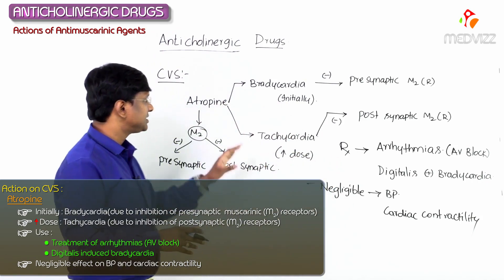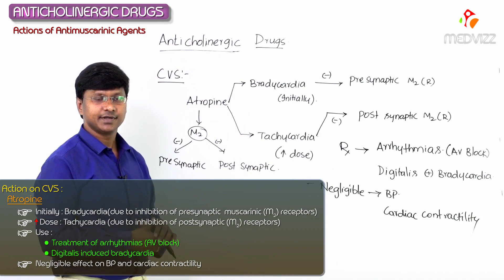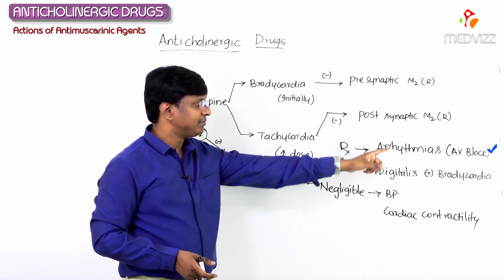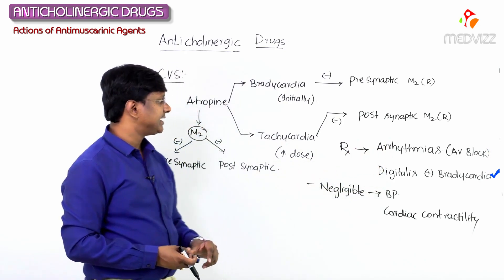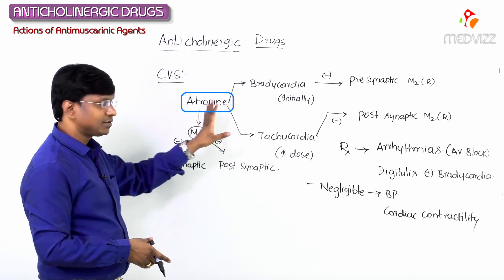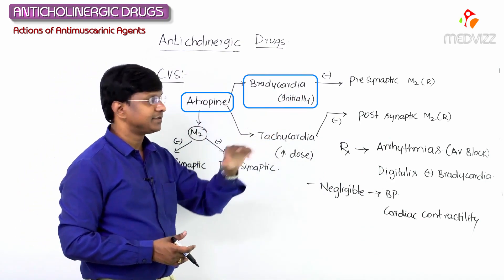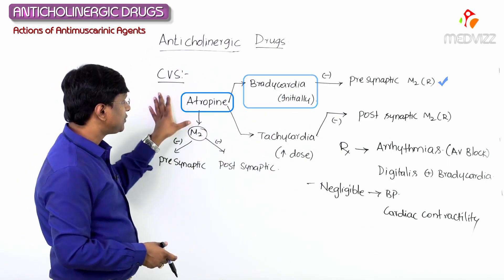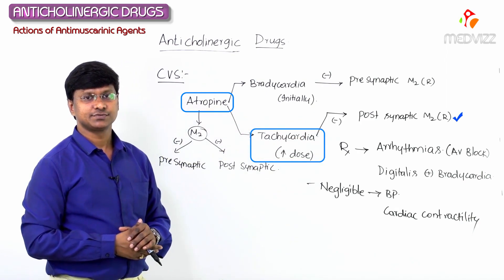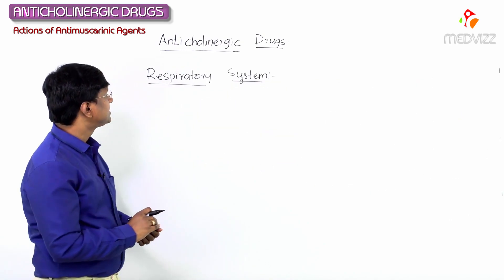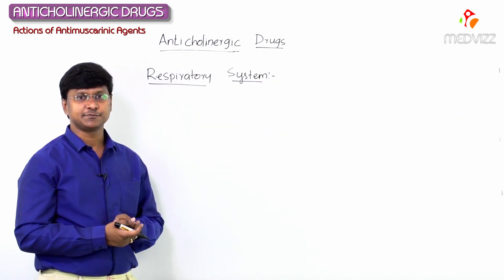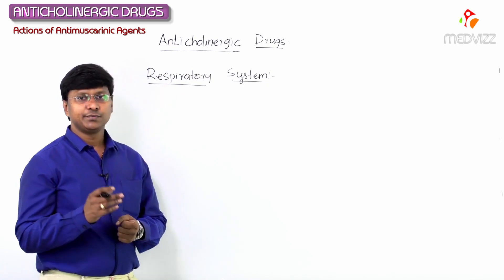Their main use is related to heart rate. They are used in the treatment of arrhythmias — AV block and digitalis-induced bradycardia. Atropine can cause bradycardia initially due to inhibition of presynaptic M2 receptors, and tachycardia due to inhibition of postsynaptic M2 receptors. Next, let me discuss the effect of anticholinergic drugs on the respiratory system.